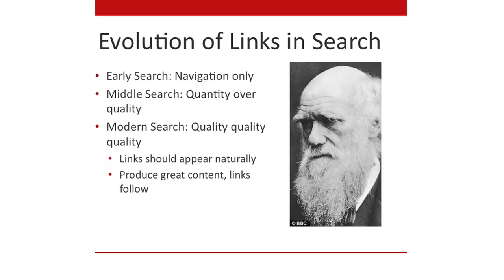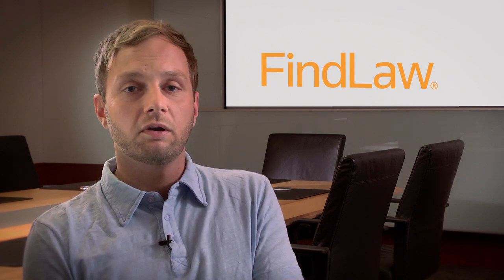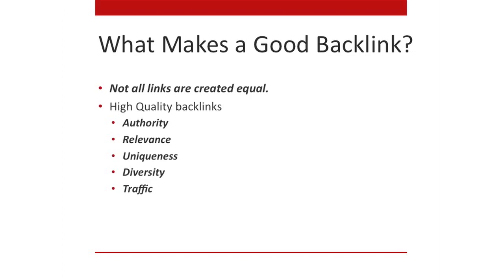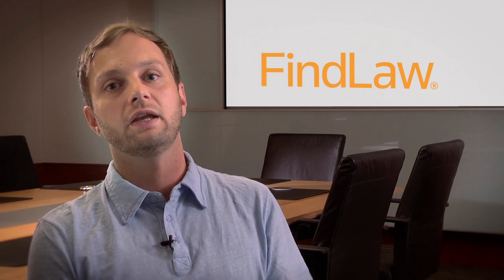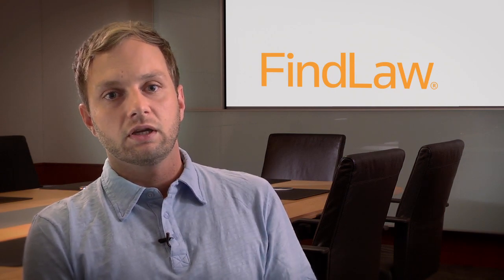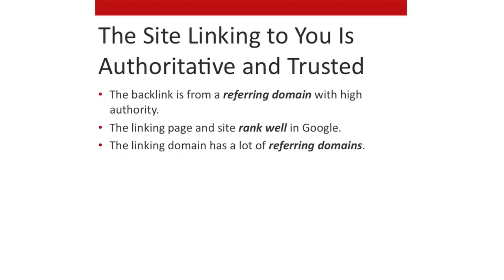So what makes a good backlink? The mantra is: not all links are created equal. Quality over quantity in modern search. The five categories of a high-quality backlink are authority, relevance, uniqueness, diversity, and traffic. For authority, you want the linking site to be as authoritative and trusted as possible — from a referring domain with high authority that ranks well in Google and has many referring domains of its own. A referring domain is simply a site that has a link pointing to another site.